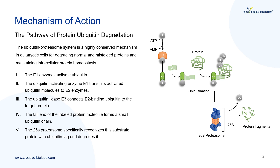The ubiquitin degradation of the target protein is completed in five continuous steps. Firstly, E1 enzymes activate ubiquitin, which requires energy from ATP. Next, the ubiquitin-activating E1 transmits activated ubiquitin molecules to E2 enzymes. Then, the ubiquitin ligase E3 connects E2-binding ubiquitin to the target protein. Fourthly, the tail end of the labeled protein molecule forms a small ubiquitin molecular chain. Lastly, the 26S proteasome specifically recognizes this substrate protein with ubiquitin tag and degrades it.